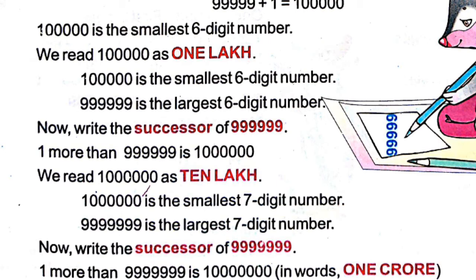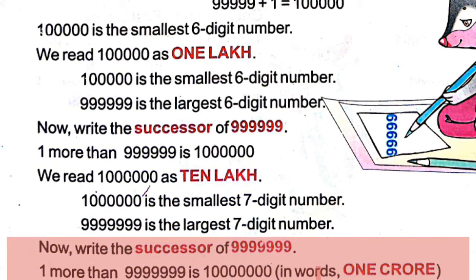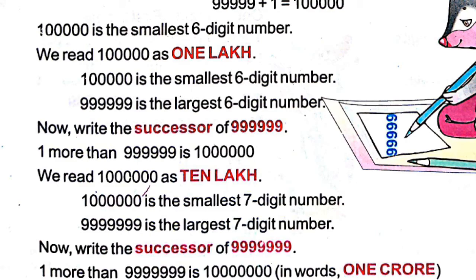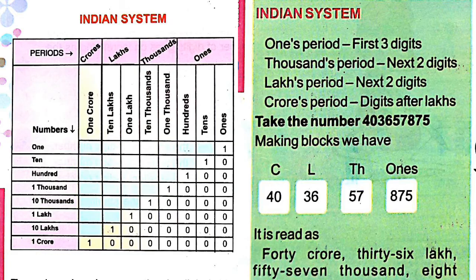Nine nines — that is 99,99,999 — is the largest seven-digit number. The successor of the largest seven-digit number is 1 with seven zeros, which we read as one crore.